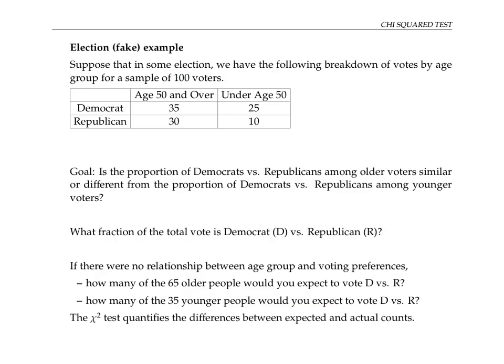Suppose in some election, we have the following breakdown of votes by age group for a sample of 100 voters. So we have 35 voters that are age 50 and over voting Democrat, 30 voters age 50 and over voting Republican, 25 under age 50 voters voting Democrat, and 10 under 50 voters voting Republican.